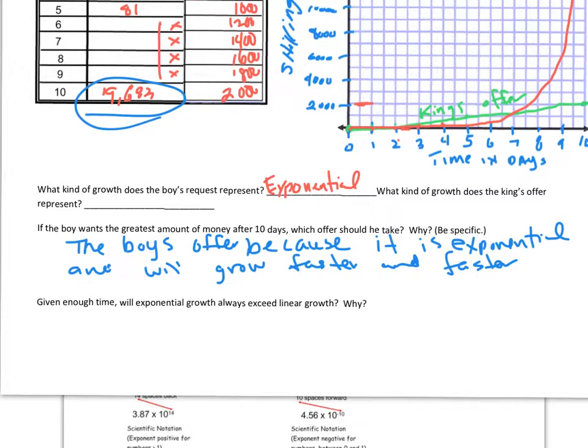The final question is something for you to project and think about it. It says, in enough time, given enough time, will exponential growth always exceed linear growth? In other words, will a growth pattern that instead of adding a constant amount every day, like 200 in our example, but multiplying every day, times 3 for instance, as in our example, will it always exceed the linear amount? What do you think?